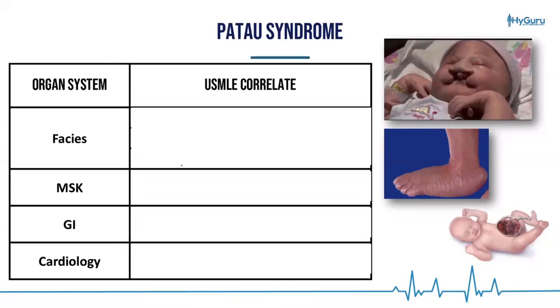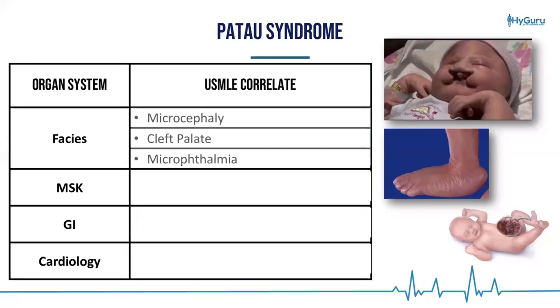With Patau syndrome, the facial features you're going to get are microcephaly, cleft palate, and microphthalmia — which is basically small eyes.